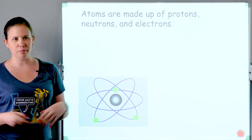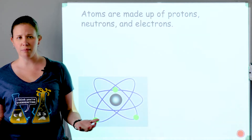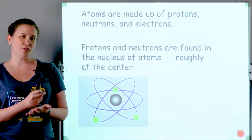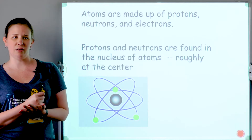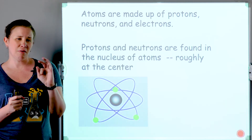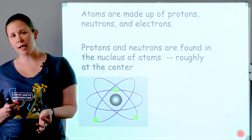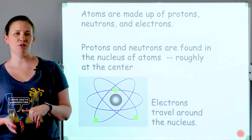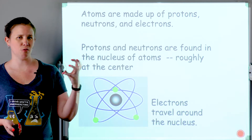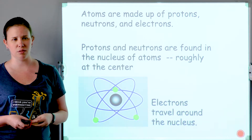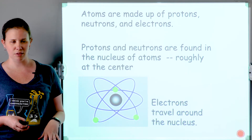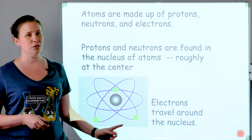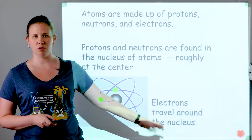So what is an atom? Atoms are made up of three main subatomic particles: protons, neutrons, and electrons. The protons and neutrons are found in the nucleus of the atom, which is the very, very center of the atom, where essentially all of your mass is located. Not that electrons don't have mass — they just have a negligible mass, a very small mass. So when we talk about mass number later, we're focusing on protons and neutrons.